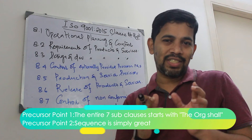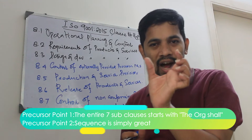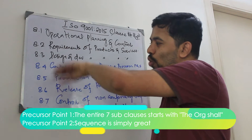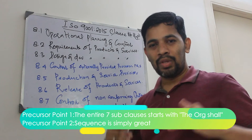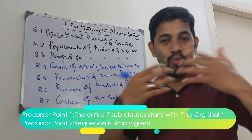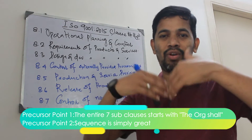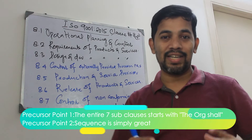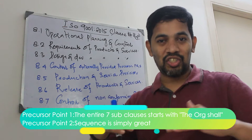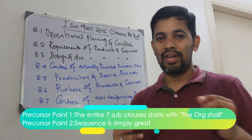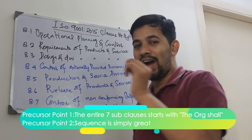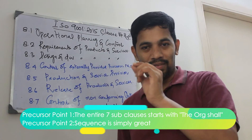The reason it starts with 'the organization shall' is because when it comes to operation, organization to organization will have a different portfolio, different processes, different ideas, different structure, different complexity and so on. That's the reason the standard has given the word 'the organization shall.'